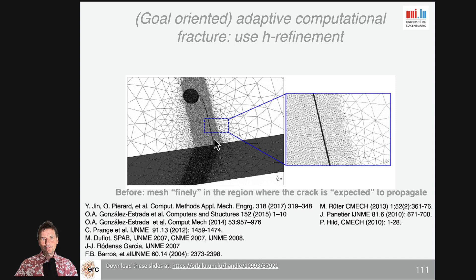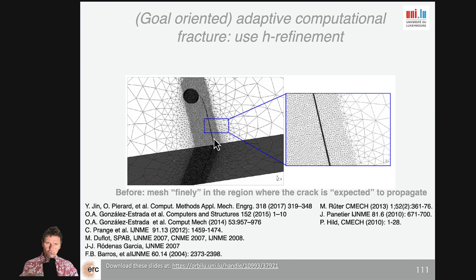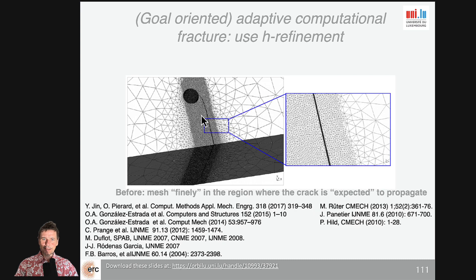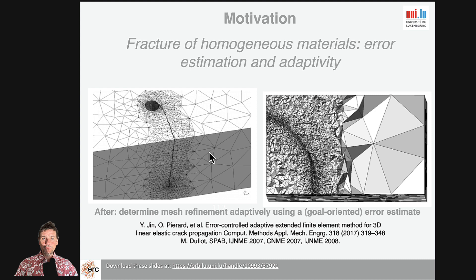What we would like to do is to have a mesh which is able to adapt on its own to the solution that it gets. If the crack propagates, we would like the mesh to adapt itself. Before, you see huge numbers of elements, like hundreds of thousands. After that, you basically decrease the number of elements by a factor of 10 to 100, and the accuracy is the same.